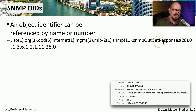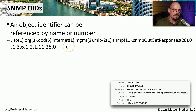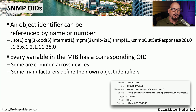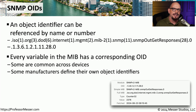You can go all the way down this line until you see that we're looking for SNMP out-get responses, which would be the number 28 at the end of that OID. This is how we're able to have hundreds or even thousands of different variables inside the Management Information Base and query each of those variables individually by referring to their OID.